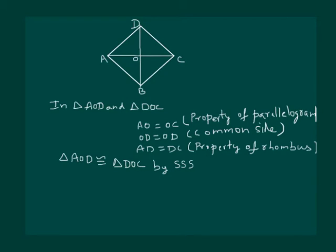But they are also forming a linear pair, so sum of both the angles should be 180 degrees. That is angle AOD is equal to angle COD, and angle AOD plus angle COD should be equal to 180 degrees, linear pair.